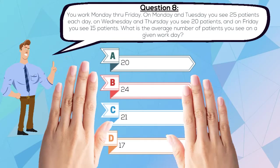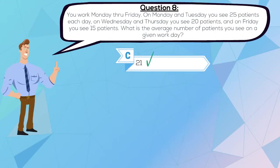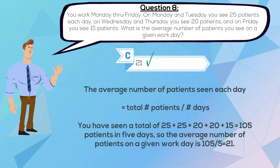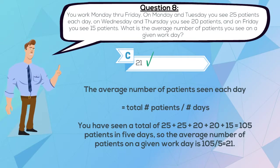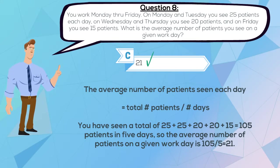The correct answer is C, 21. The average number of patients seen each day equals total number of patients over number of days. You have seen a total of 25 plus 25 plus 20 plus 20 plus 15, which equals 105 patients in 5 days. So the average number of patients on a given work day is 105 over 5, which equals 21.